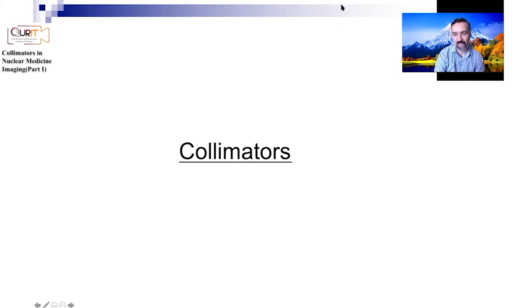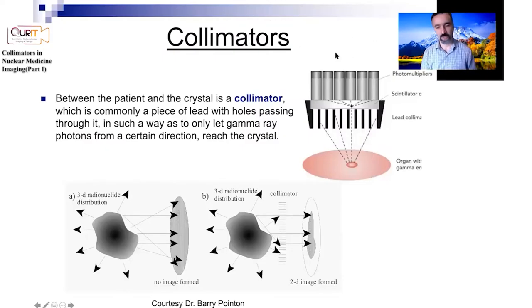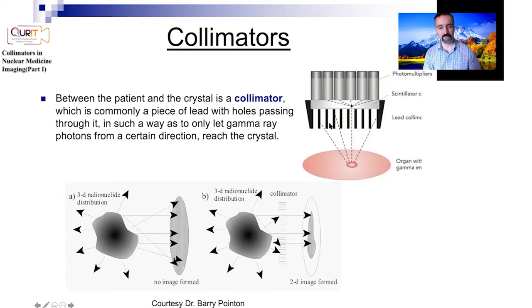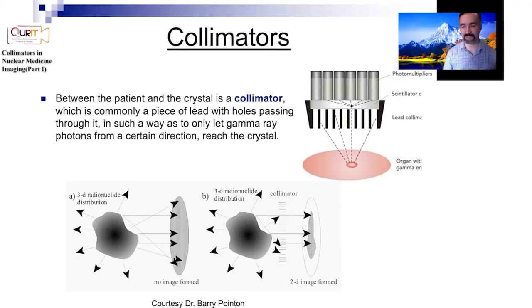Let's talk about some specifics of collimation. Between the patient and the crystal, these collimators are placed, commonly made from lead. The idea is if you do not have collimation, you don't know where the signal that you have just received is coming from — unless you have more sophisticated cameras like the so-called Compton cameras.